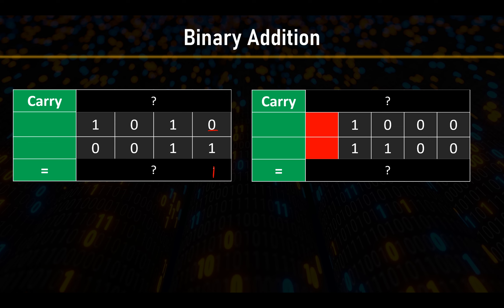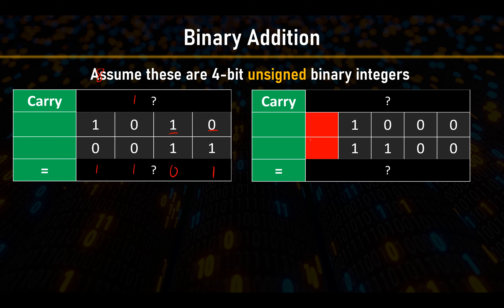Working through the first example: zero plus one equals one; one plus one equals zero, carry one; one plus zero plus zero equals one; one plus zero equals one. We can check our answers: if this is the eights column, fours, twos, ones — the first number is 10 (eight plus two) and the second is three (two plus one). Eight plus four is 12, plus one is 13. We've done this correctly.